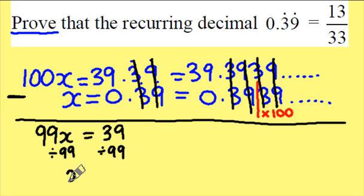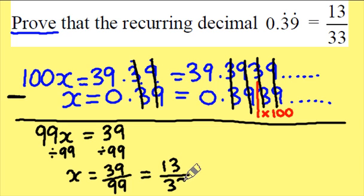Dividing both sides by 99 leaves me with x is 39 over 99. Now both of these numbers are divisible by 3 leaving me with the answer 13 over 33. So we've proved it.